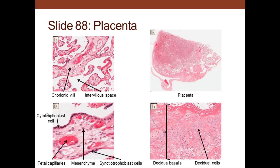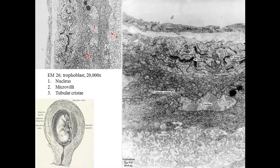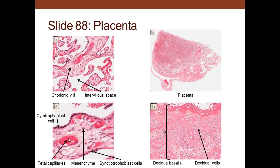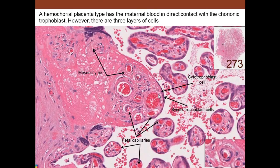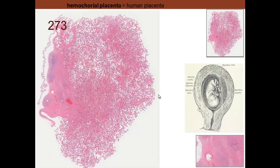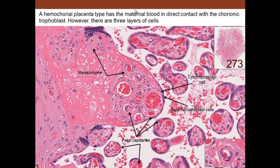Here we see the different layers of the placenta — mother's blood bathes here, and the fetal blood is contained within the villi. Nutrients and oxygen have to pass through the epithelial and endothelial cells to reach the fetal blood. Here we see the placental villi interacting with the mother's blood. At higher magnification we can see mother's blood in the intervillous space, the cytotrophoblast on the inside, and the syncytiotrophoblast — which is invasive — on the outside, and then the endothelial cells of the fetal blood vessels.